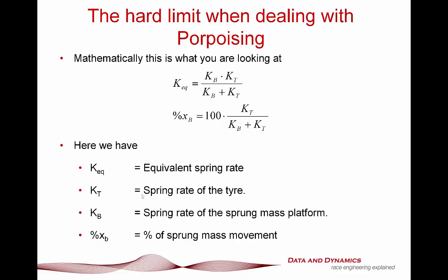To explore this a little bit further, our equivalent spring rates — that is, if we lump our platform and tyre spring rate into a single spring — is going to be the multiple of our body rate times our spring rate, divided by the sum of both. The real takeaway is that the percentage of body movement is given by the tyre spring rate divided by the sum of the body spring rate and the tyre spring rate. If the tyre spring rate is really, really low, and particularly if you're dealing with large numbers of downforce, your hands pretty much get tied.